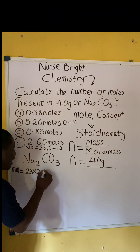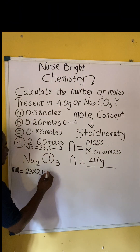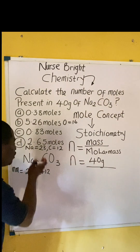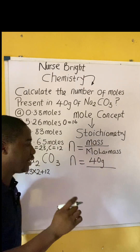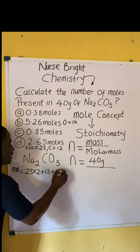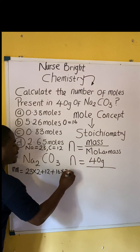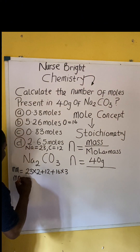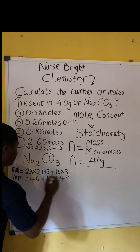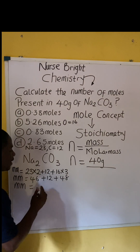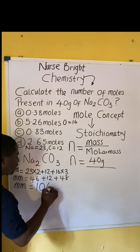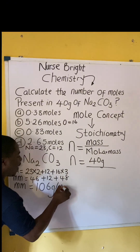Going over to carbon, we add plus carbon's atomic mass of 12. Since we have no subscript number for carbon, we don't multiply. Going over to oxygen, we add plus 16, but we have a subscript of 3, so times 3. Molar mass will now be equal to 46 plus 12 plus 48. When you calculate, the molar mass of this compound becomes 106 grams per mole.